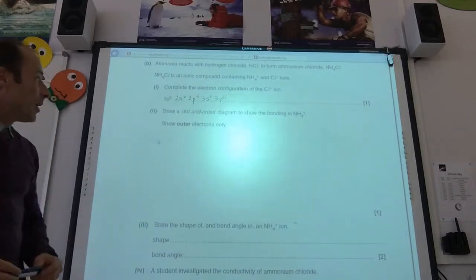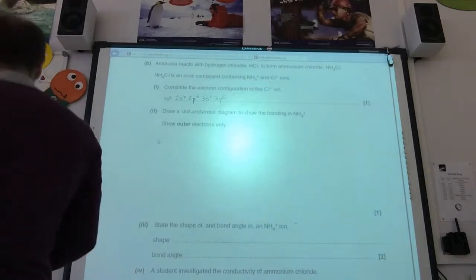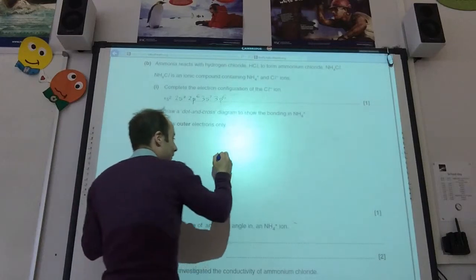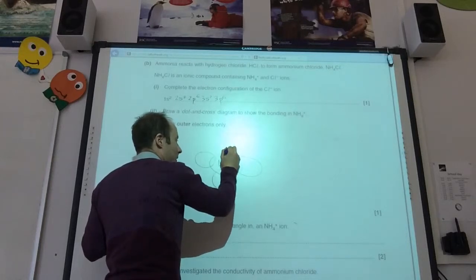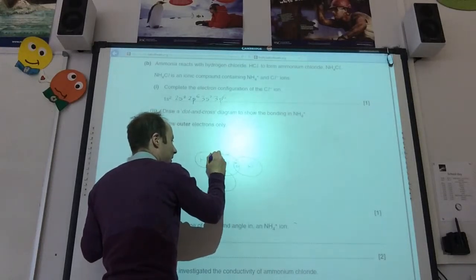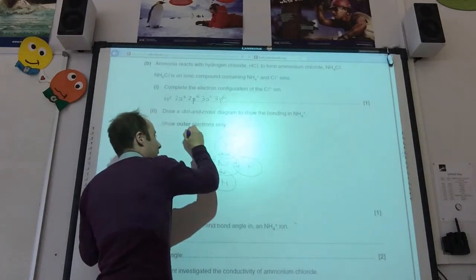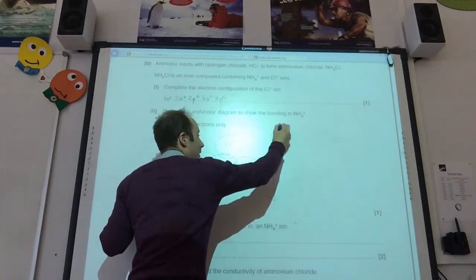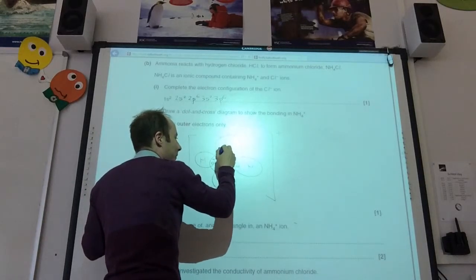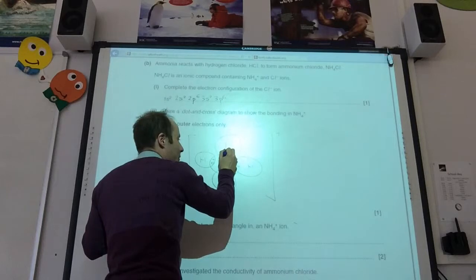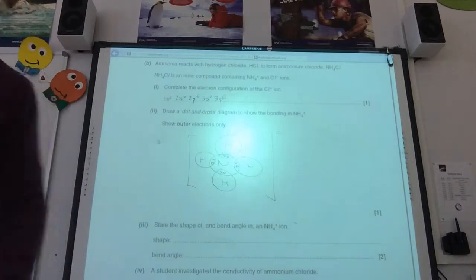Draw the dot and cross diagram of the NH4 plus ion. Okie dokie. So, you've just drawn ammonia. Like so. This is quite nice because you've already done the hard work. And then along comes an H plus sits on it, like so. Plus charge overall. And that there is your... Oh, that's the big part. That there is your dative covalent bond. So, make sure that those electrons are the same.